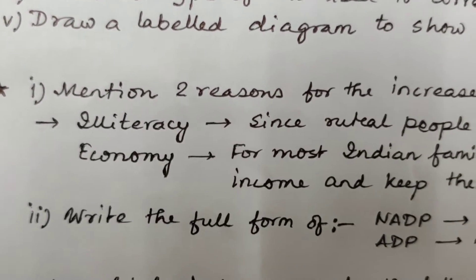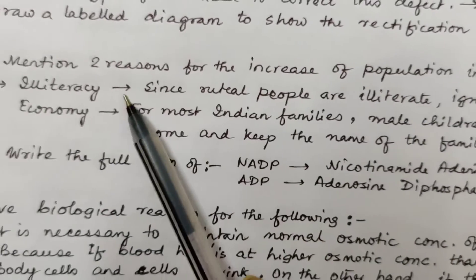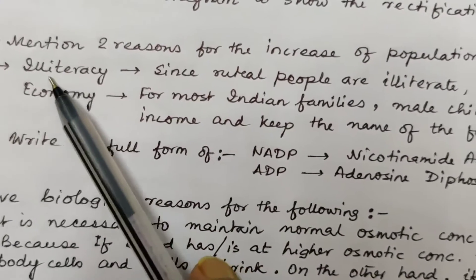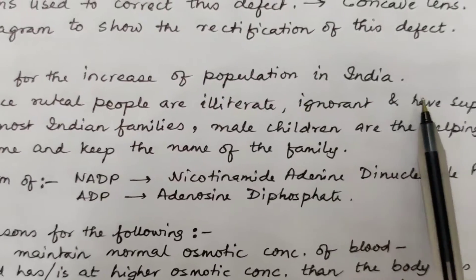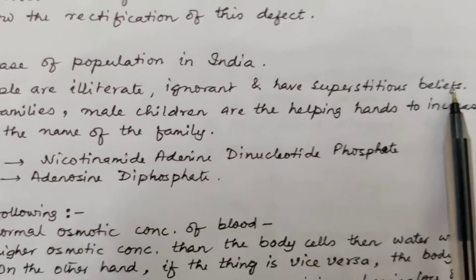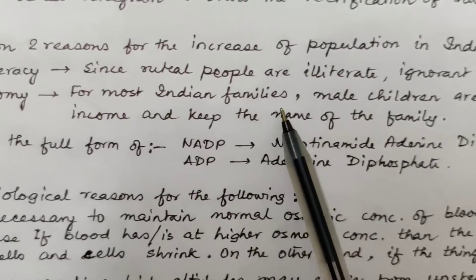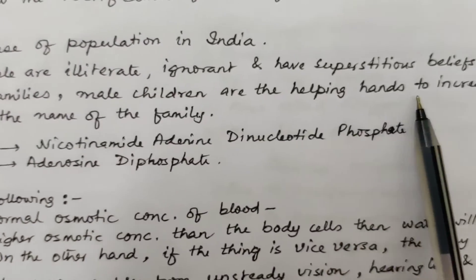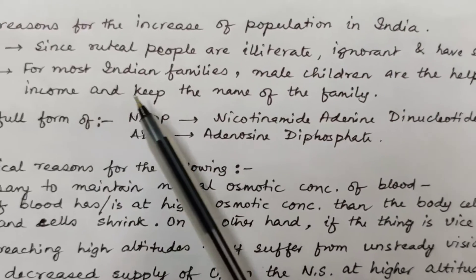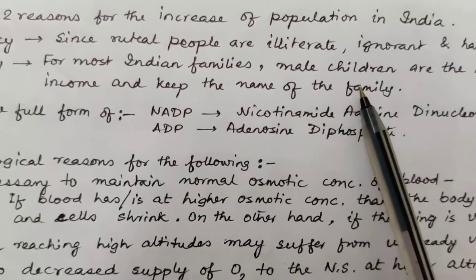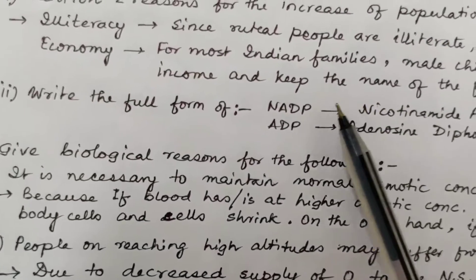Mention two reasons for the increase of population in India. Number one is illiteracy, since rural people are illiterate, ignorant and have superstitious beliefs. Number two is economy, as for most Indian families male children are considered helping hands to increase the family income and to carry on the family name.